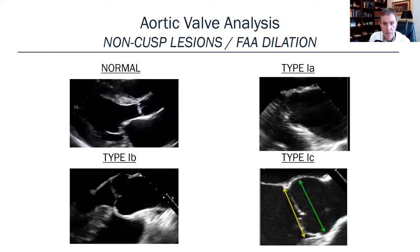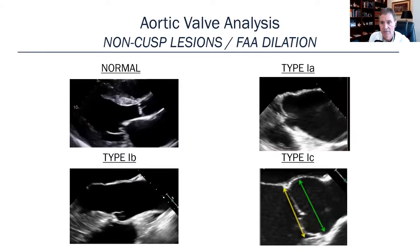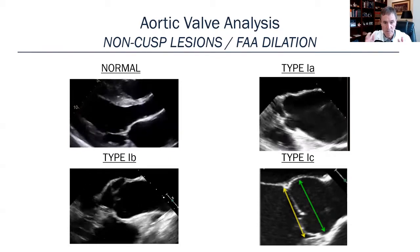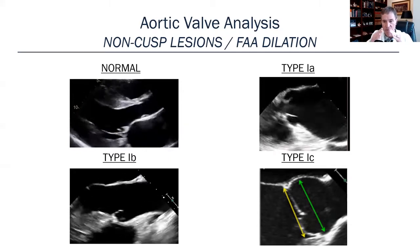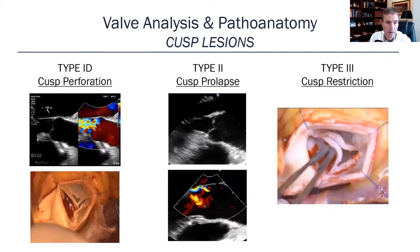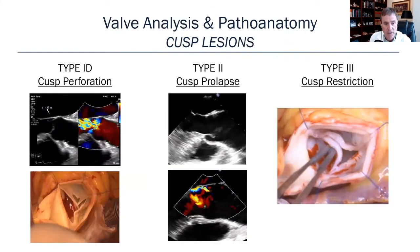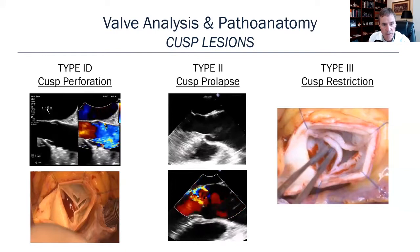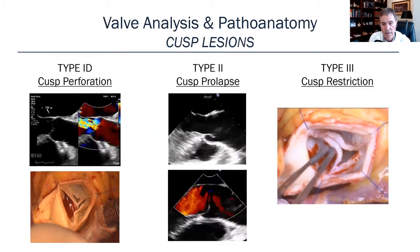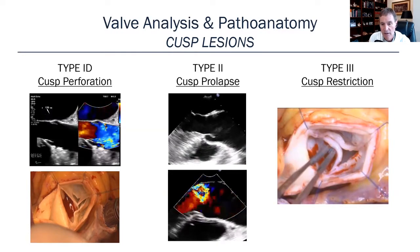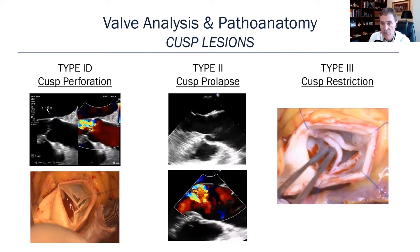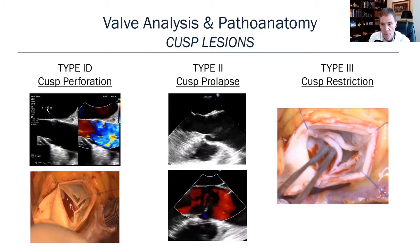Type 1A is dilatation of the sinotubular junction pulling the leaflets apart. Type 1B is seen in Marfan syndrome, and type 1C involves just the aortic annulus itself with a normal sinotubular junction. Type 1D is cusp perforation — here's a traumatic cusp perforation example. Type 2 is cusp prolapse, generally causing an eccentric jet of regurgitation. And cusp restriction, type 3, is seen in radiation injury, rheumatic disease, or calcific disease.